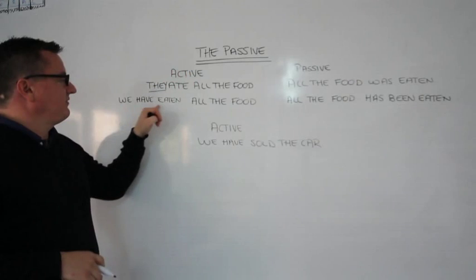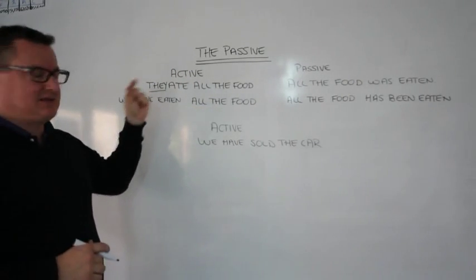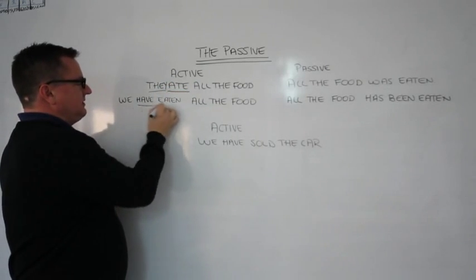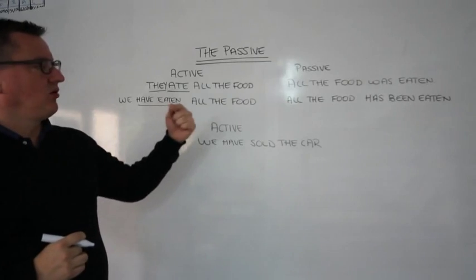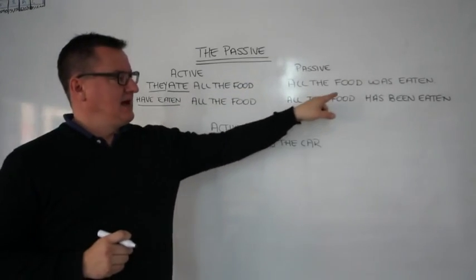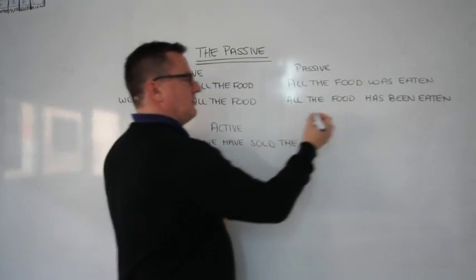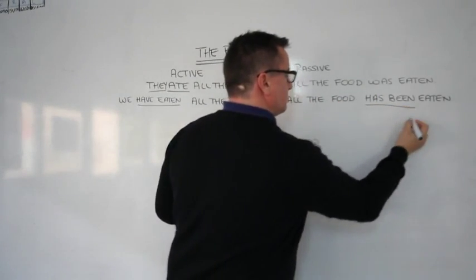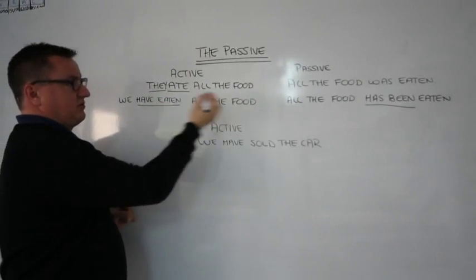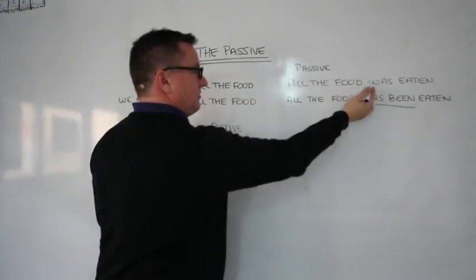'We have eaten all the food.' Now here is a different tense. This one is in past, this one is in present perfect. 'We have eaten all the food' — so over here, 'All the food has been eaten.' So you use the same structure. Using present perfect, present perfect has got to be over here. Past simple — the past simple has got to be over here.